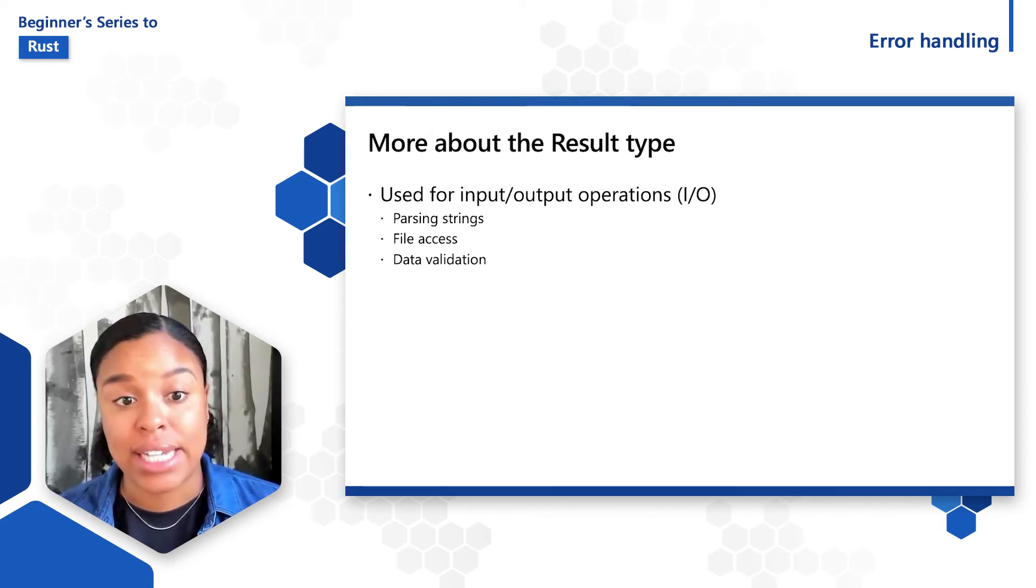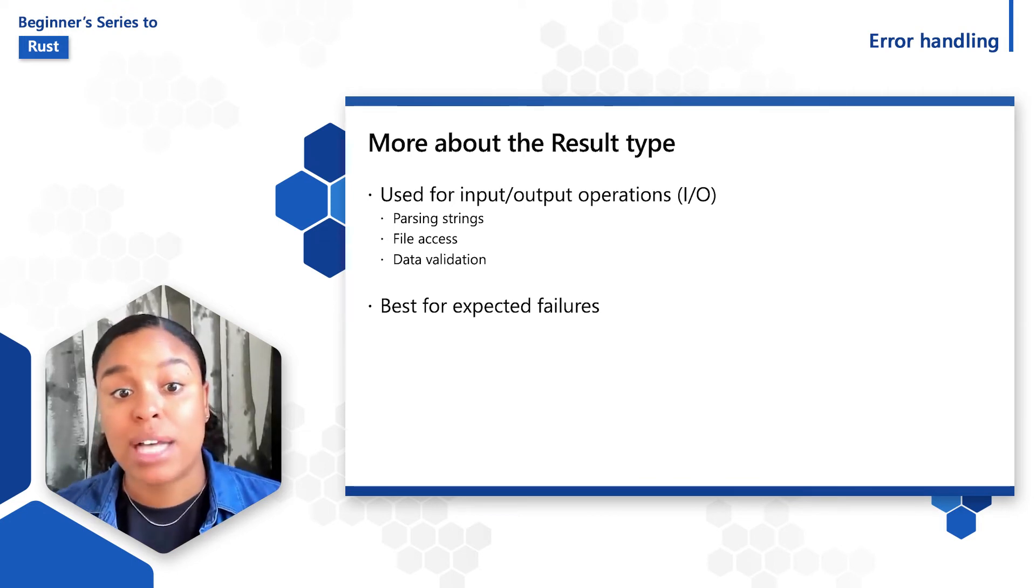The result enum is principally used for input and output operations such as parsing strings into other types, file access, and data validation. In contrast to the option type, which describes the possibility of the absence of a value, the result type is best suited whenever failures are expected.